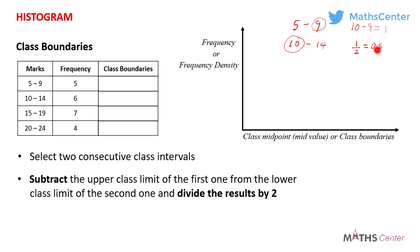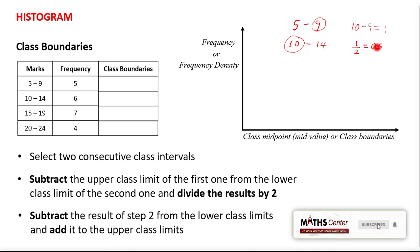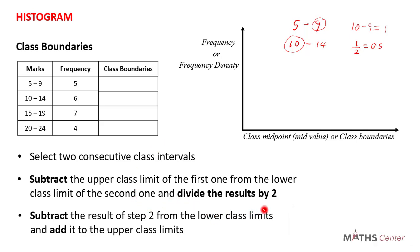After getting 0.5, subtract this result from the lower class limits and add it to the upper class limits. For the first interval, 5 to 9: 5 minus 0.5 = 4.5, and 9 plus 0.5 = 9.5. So the class boundary for the first interval is 4.5 to 9.5.